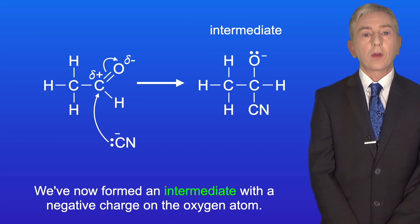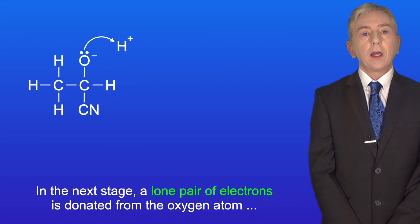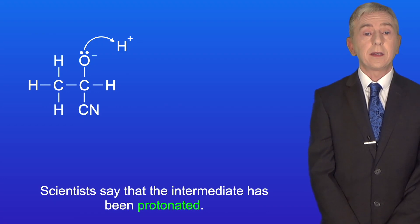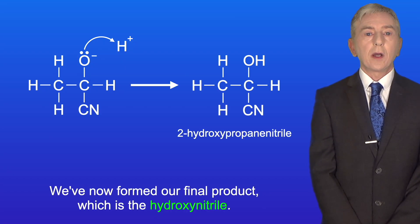We've now formed an intermediate with a negative charge on the oxygen atom. In the next stage a lone pair of electrons is donated from the oxygen atom to a hydrogen ion. Scientists say that the intermediate has been protonated and we've now formed our final product which is the hydroxynitrile.